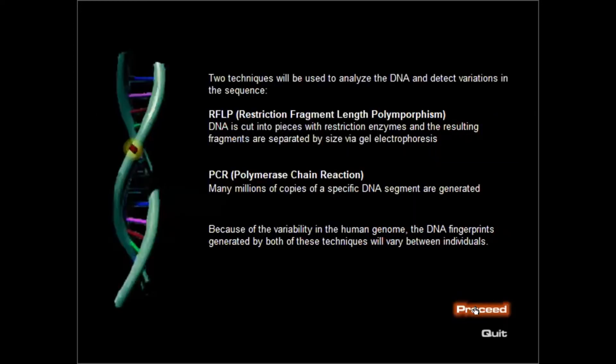Two techniques will be used to analyze the DNA and detect variations in the sequence. First, RFLP — restriction fragment length polymorphism — where DNA is cut into pieces with restriction enzymes and the resulting fragments are separated by size via gel electrophoresis. Second, PCR — polymerase chain reaction — where many millions of copies of a specific DNA segment are generated. Because of the variability in the human genome, the DNA fingerprints generated by both techniques will vary between individuals.